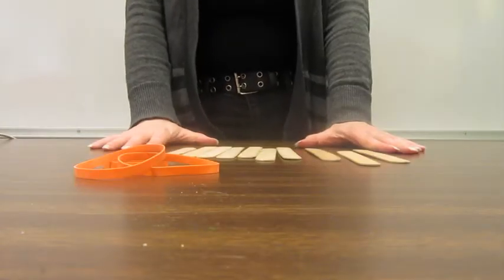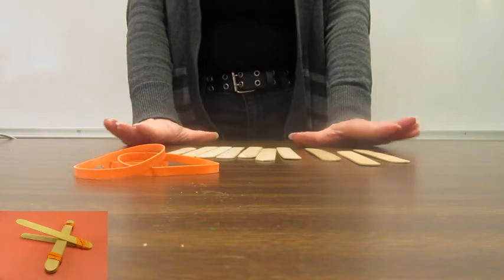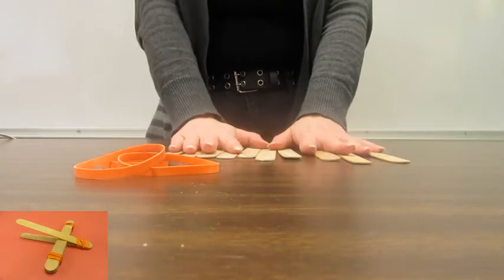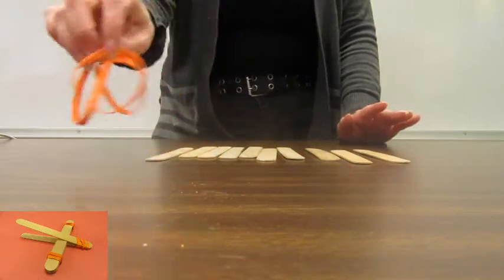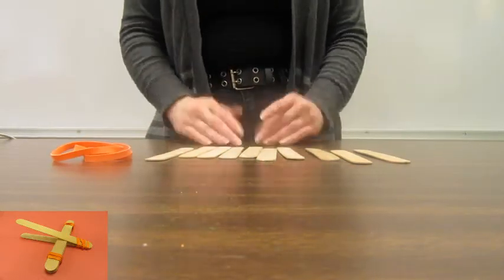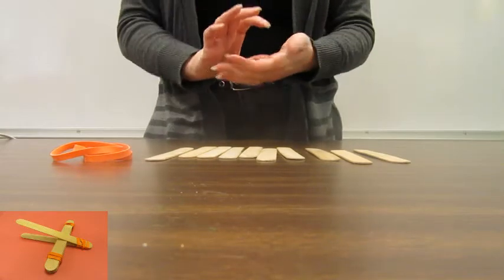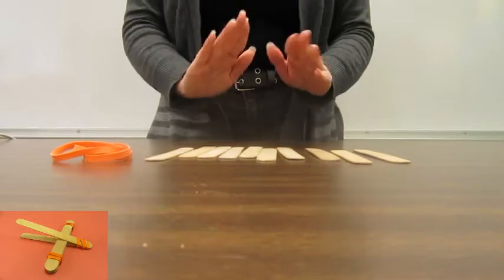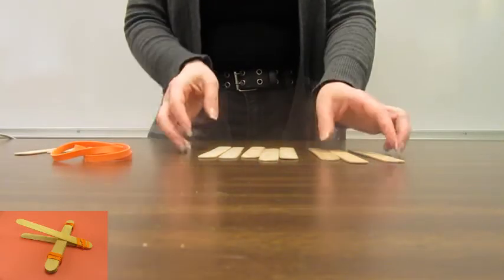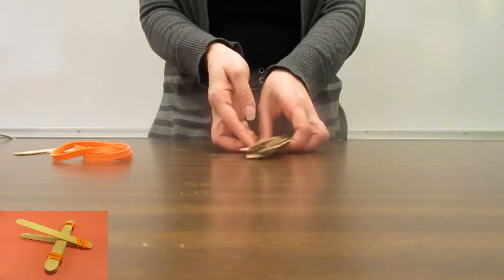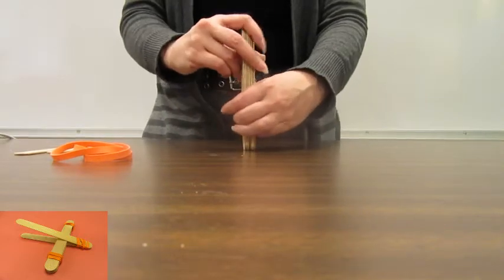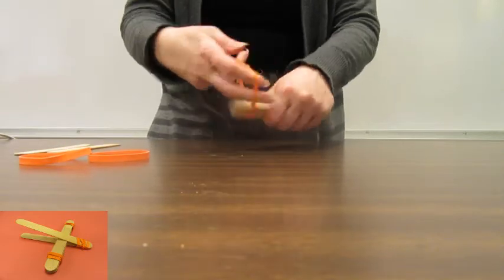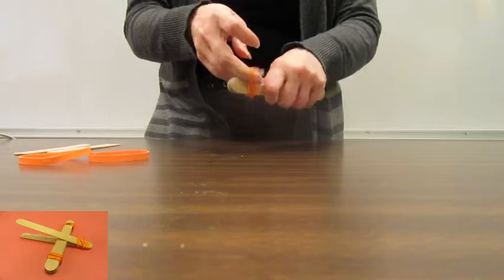All right. For our next craft, we are going to make a catapult. This one I do recommend jumbo sticks for. It just makes things work a little bit easier. You're going to need nine sticks total and three rubber bands. Now, optionally, you may want a spoon or like a bottle cap to put on the end of your launcher, but it's not necessary. That's more if you want to do it that way. So to start, set two of your sticks aside and stack up the other seven, like so. I'm going to take one of your rubber bands and close the end like so.